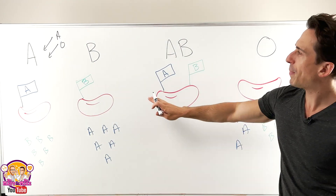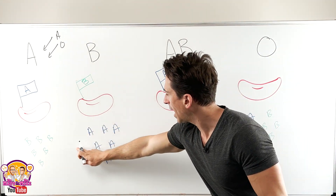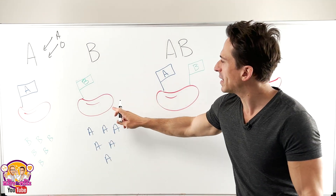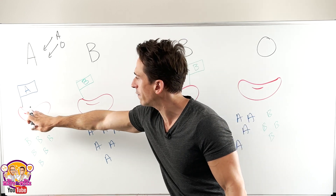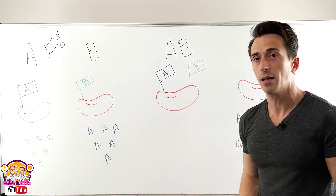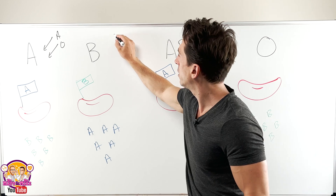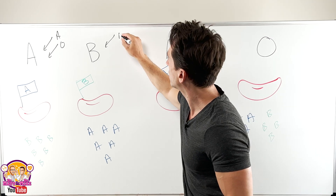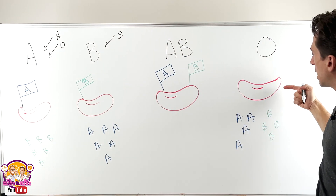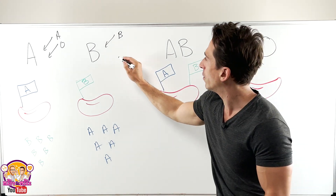What about B? Well, B similarly has anti-A antibodies, so B cannot receive A blood and B cannot receive AB blood. B can receive B blood — that makes sense — and it can receive O blood because there's no flag on the O.